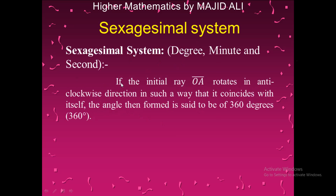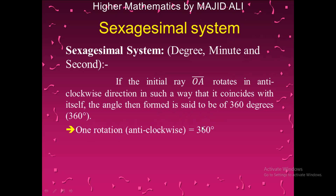If the initial ray OA rotates in the anti-clockwise direction in such a way that it coincides with itself, then the angle formed is said to be 360 degrees. In other words, one complete rotation is equal to 360 degrees.